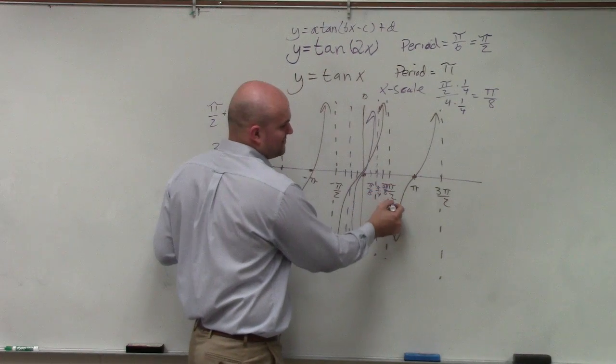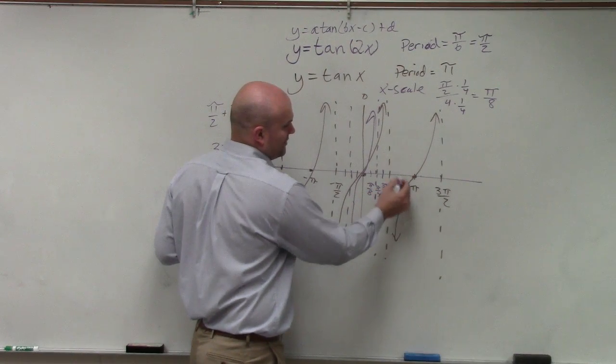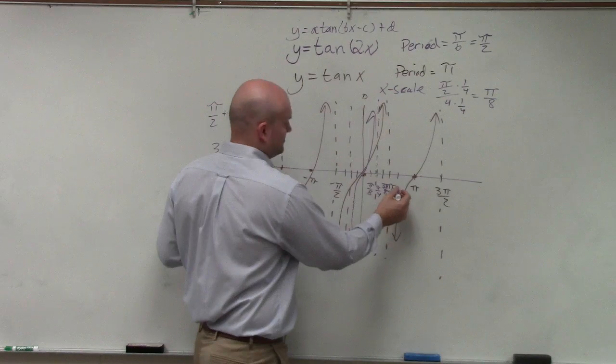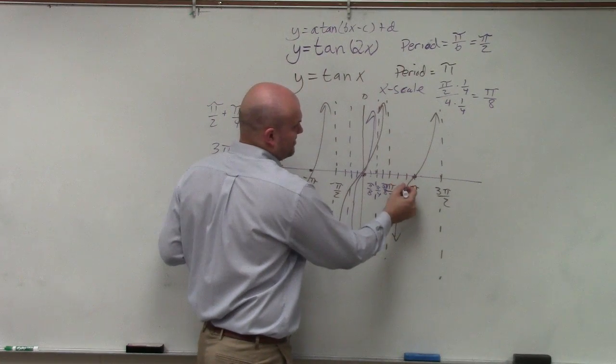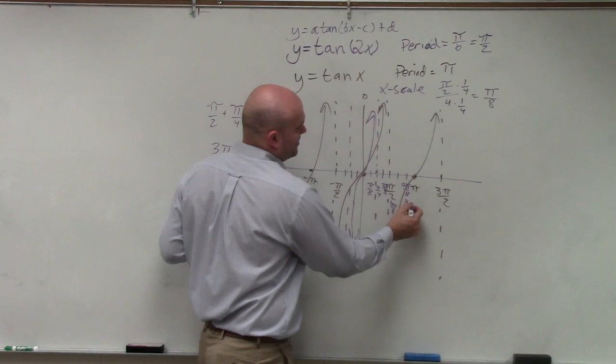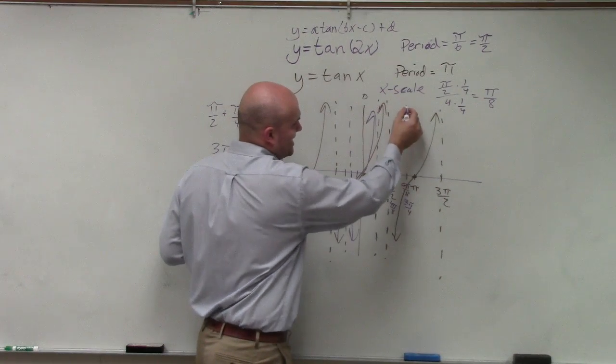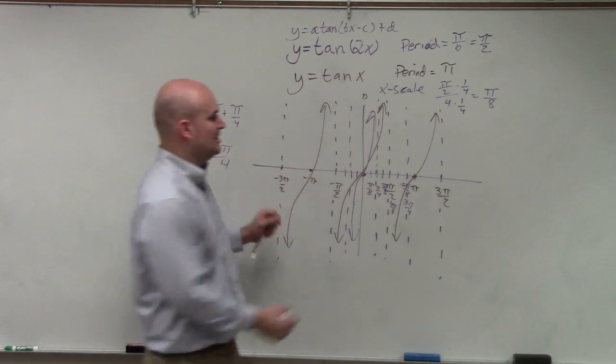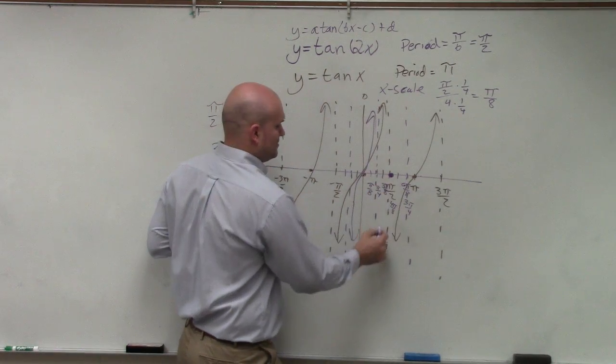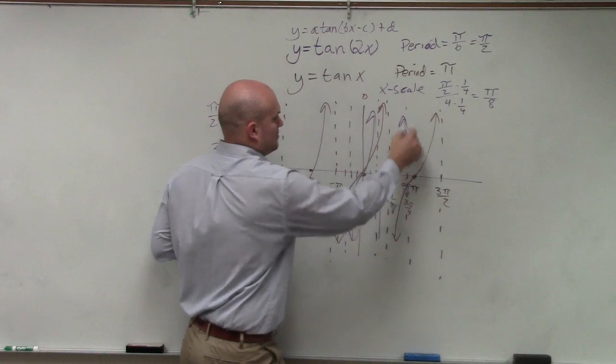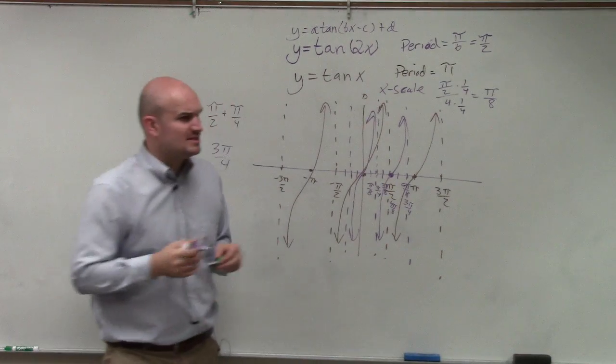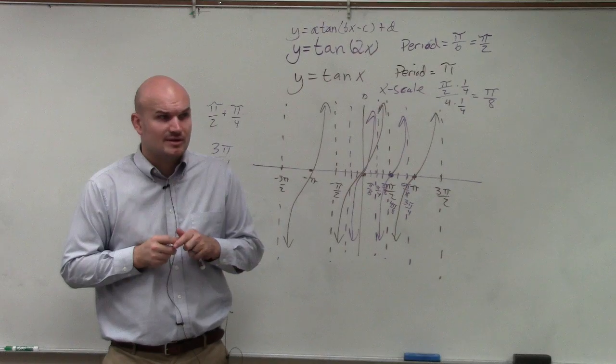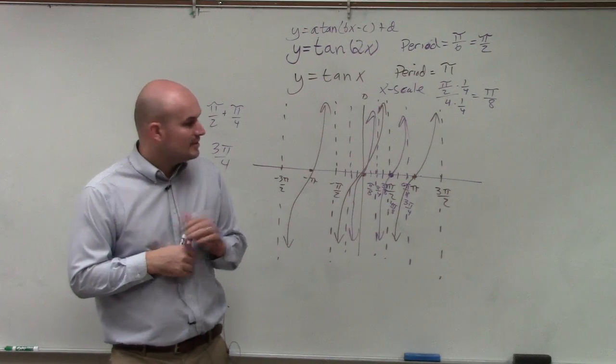This would be 4 pi halves, or 4 pi over 8, 5 pi, 6 pi over 8, which is 3 pi over 4. So my next asymptote is going to be right there, and then in the middle is going to be my next intercept. Does that make sense, kind of? I lost anybody? Questions?